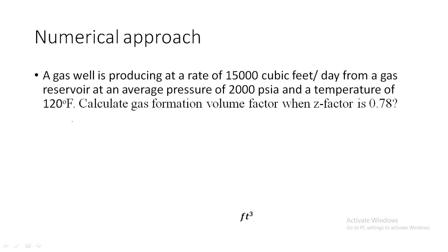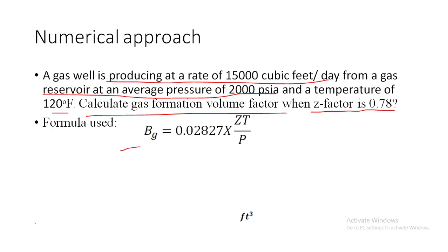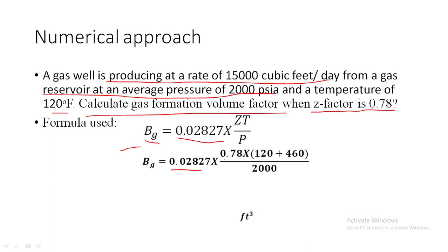Now for a numerical example: a gas well is producing at a rate of 15,000 ft³/day from a gas reservoir at an average pressure of 2000 psi and a temperature of 120°F, and the compressibility factor Z is 0.78. We will calculate the gas formation volume factor. Using the formula BG = 0.02827 × ZT/P, I am substituting Z = 0.78 and the formula is shown here.